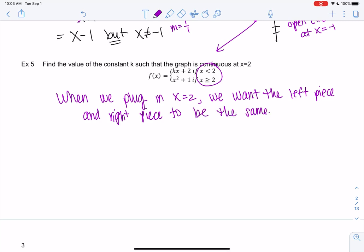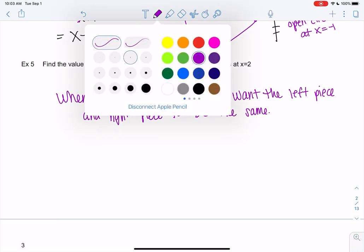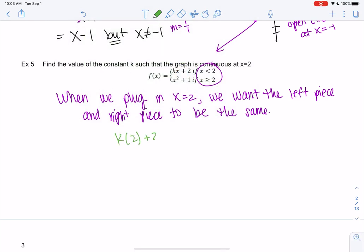We don't know what k is, but when I plug in 2, I want k times 2 plus 2—that's my left side—and we need it to be the same as the right side, which is 2 squared plus 1. By having the same value, that means the graph is going to touch rather than the pieces being separate. So we get 2k plus 2 equals 4 plus 1, or 2k plus 2 equals 5. Subtract 2, k equals 3. Divide by 2, so k equals 3 halves.